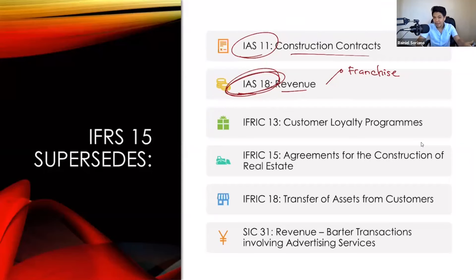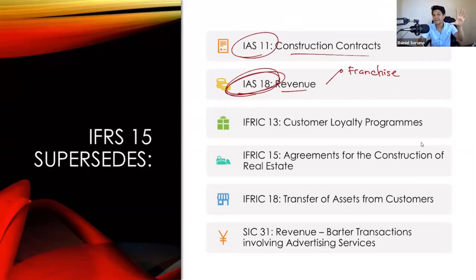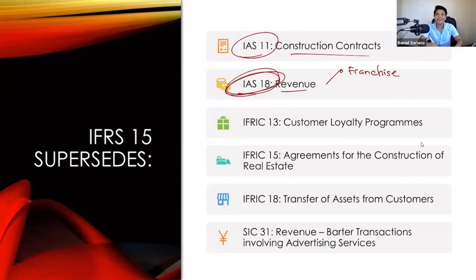Under the new standard — IFRS number 15 — the rules are now different. There are now five steps before we can recognize revenue. We will discuss these five steps later in order to understand when a company is allowed to recognize revenue.